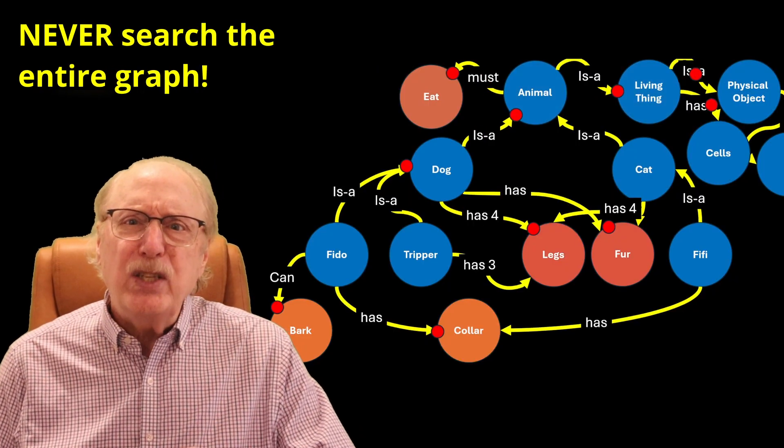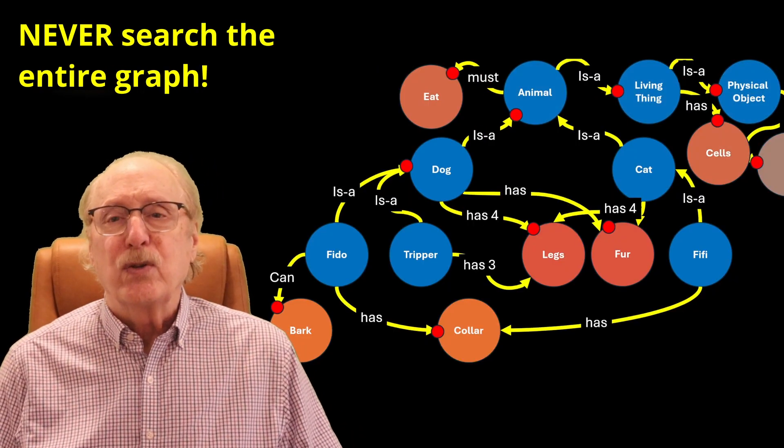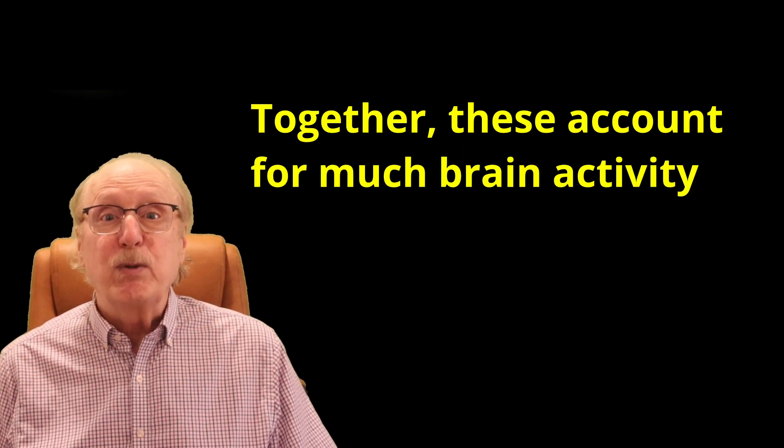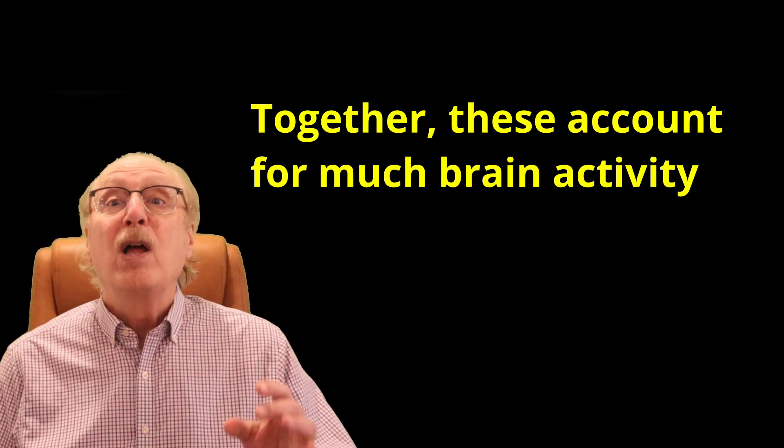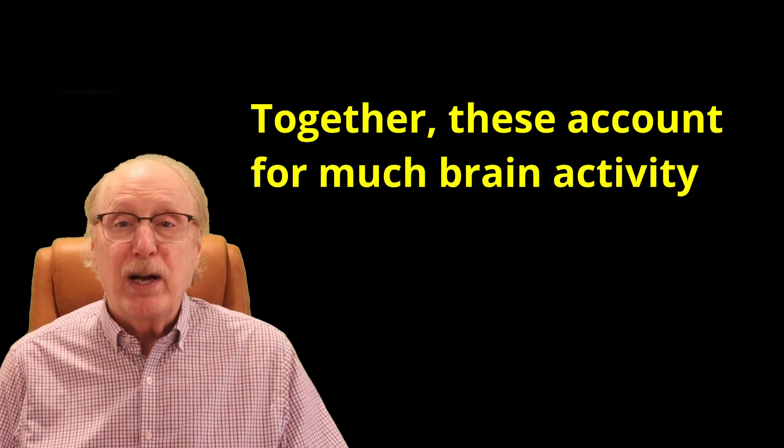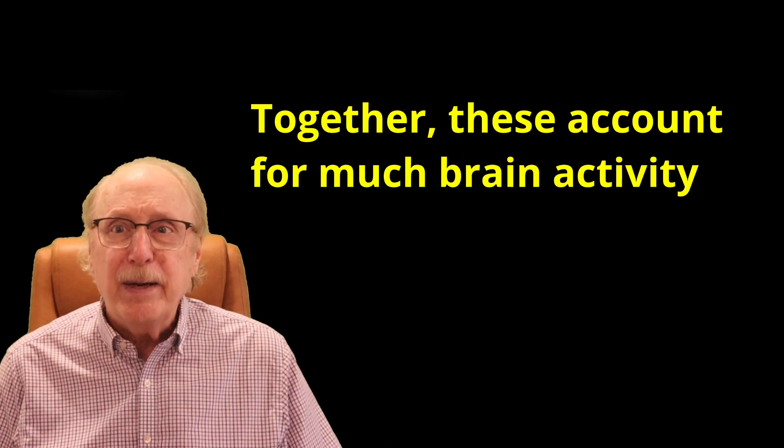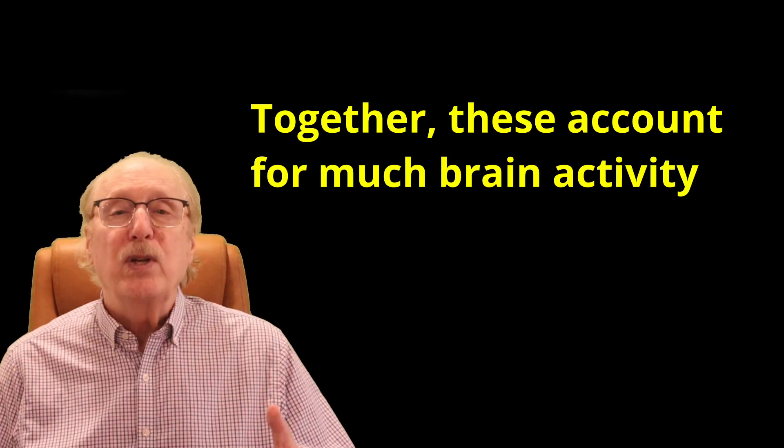This split means your brain never needs to search the entire graph. These two options, perceptual search and attribute recall, make up the lion's share of computation in the brain's graph because they happen all the time. So we'll focus in on these. Could they be replicated in AI, and would AI then match the low energy levels needed by the human brain? Let's see.